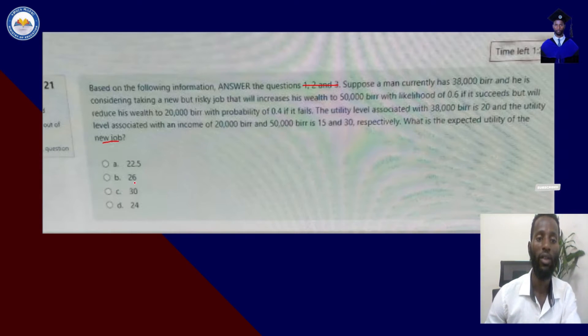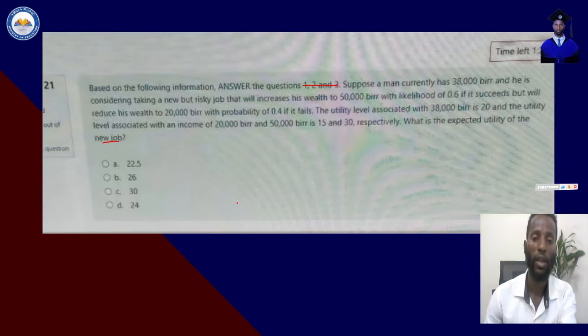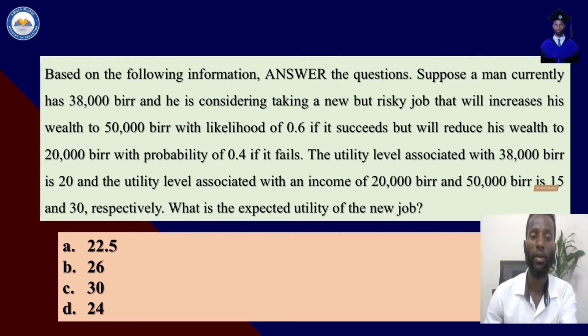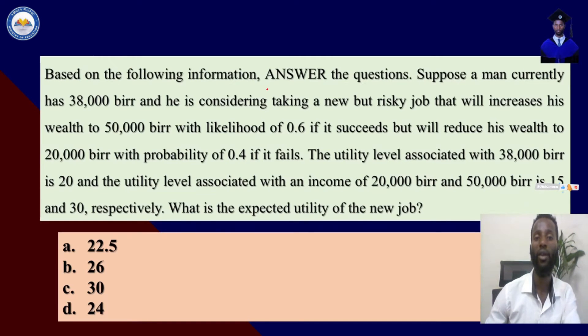What is the expected utility of the new job? A: 22.45, B: 26, C: 30, D: 24.